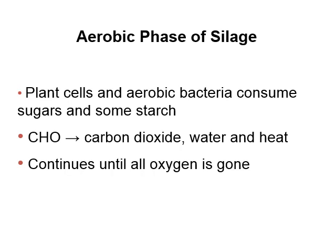They take that carbohydrate and turn it into CO2, water, and heat. This destruction of carbohydrate is not good — we want that carbohydrate to make lactic acid and to be available to our cows. If the plant cells and aerobic bacteria use up that carbohydrate, it won't be useful later on. This carbohydrate destruction continues until all the oxygen is gone.